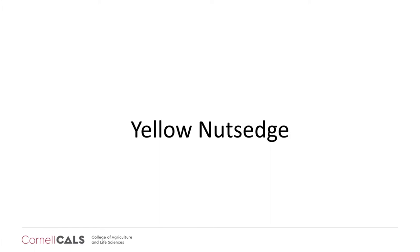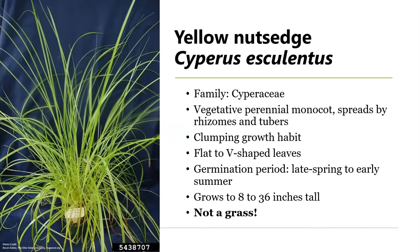The last weed we'll discuss today is our sole monocot: yellow nutsedge, Cyperus esculentus. It is in the Cyperaceae family. It is a vegetative perennial monocot that spreads by rhizomes and tubers. It tends to have a clumping, upright growth habit with flat to V-shaped leaves. The big thing to impress upon you: this is not a grass. Remember the saying 'sedges have edges' — that V-shape with edges means it's most likely a sedge. Its germination period is from late spring to early summer, and it typically grows 8 to 36 inches in height.